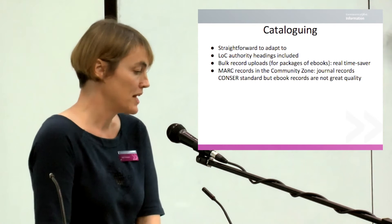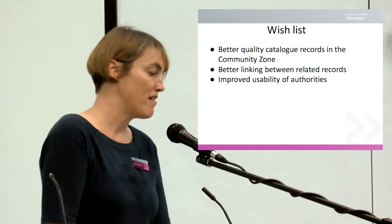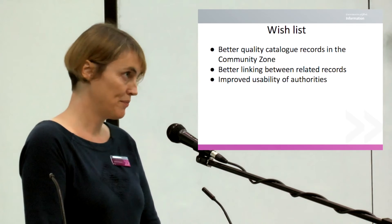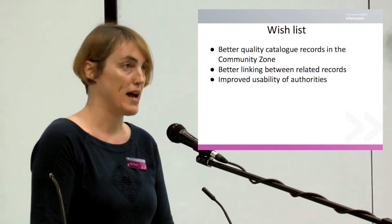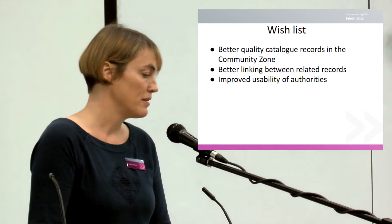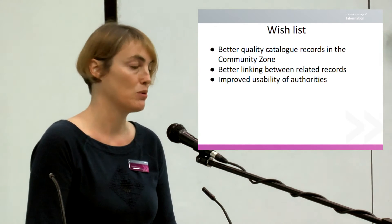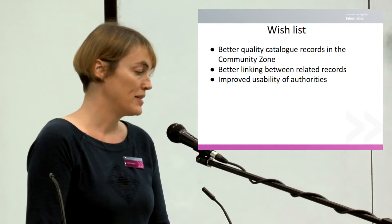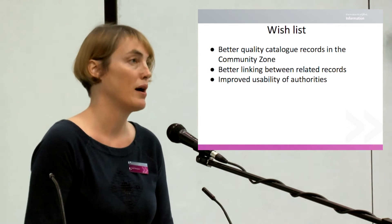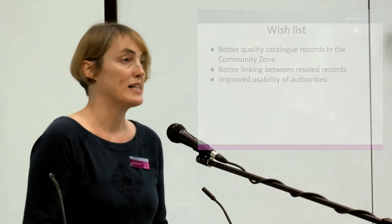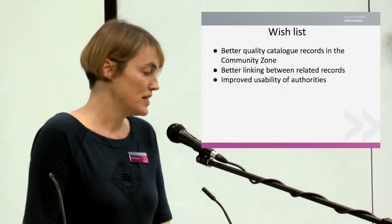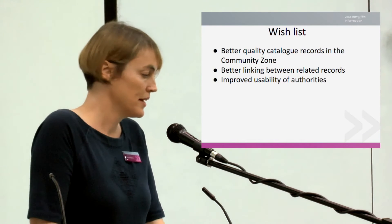The MARC records in the community zone are of variable quality — the serials ones tend to be better and are at least CONSER standard, but the ebook ones generally are not great at the moment. Ex Libris are aware of this and are putting effort into improving quality, but that is why we still upload MARC records from suppliers rather than just activating those in the community zone, because often there is only a title or possibly an author and that's not good enough quality for us.